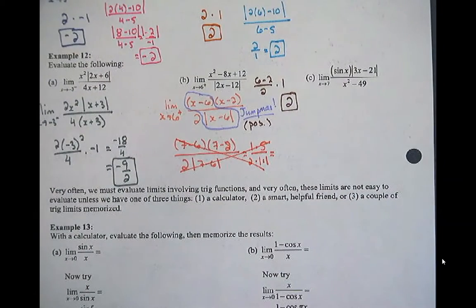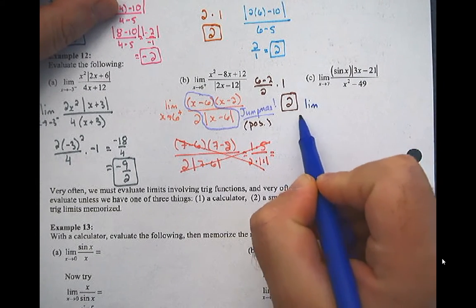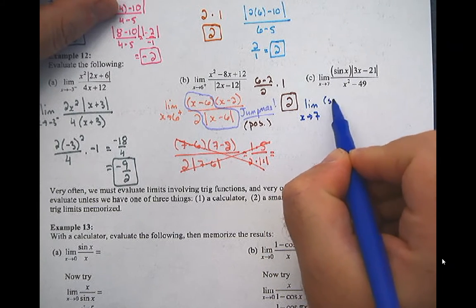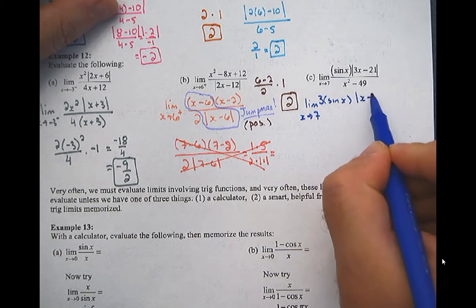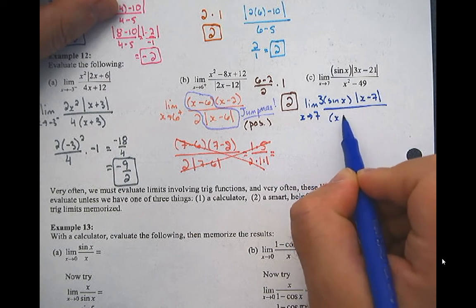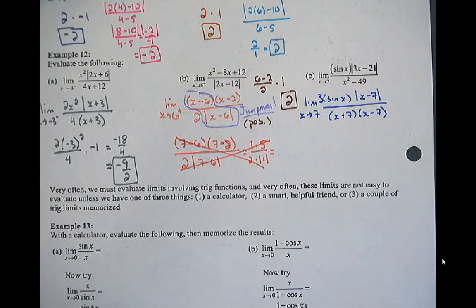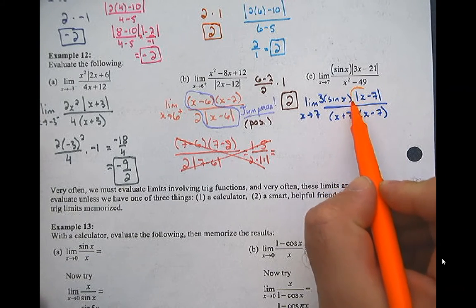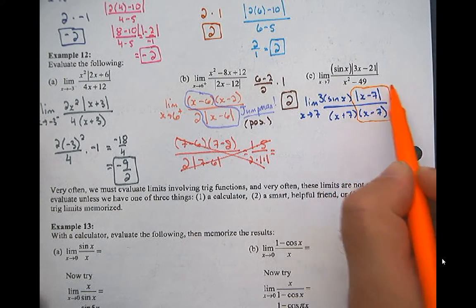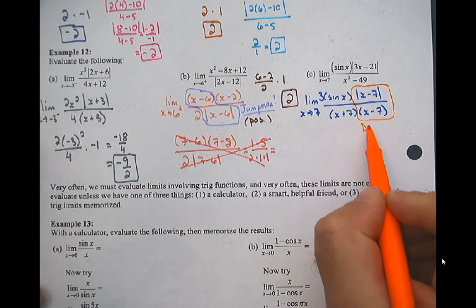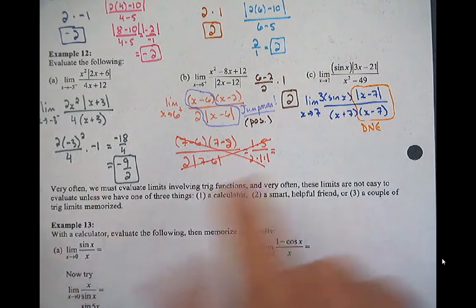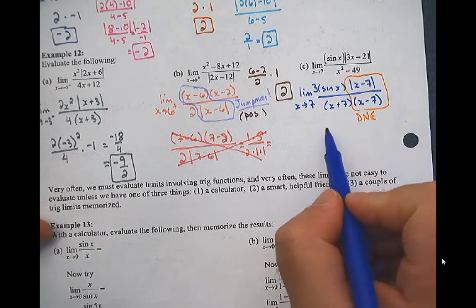Let's have you try this one on your own — see if you can break it up first. The limit as x approaches 7 of sine(x)·absolute(x−7) over (x²−49). I take a 3 out: 3·sine(x)·absolute(x−7) over (x+7)(x−7). I see Jumpman in the absolute(x−7) over (x−7). This is the overall limit — not a one-sided limit. What's the overall limit of Jumpman at 7? It's DNE. So this whole thing ends up being DNE, because the jump blows it all up.